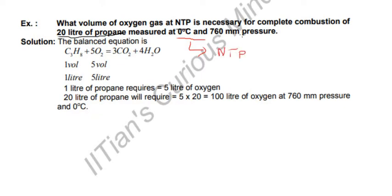This is the balanced equation. Propane (C₃H₈) reacts with five moles of oxygen to give three moles of carbon dioxide and four moles of water. This is a balanced reaction, as you can see.